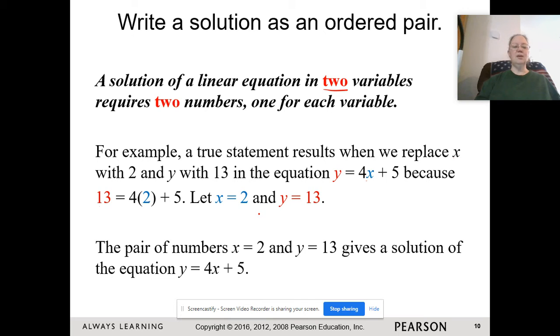So 13 equals 4 times 2 plus 5. 4 times 2 is 8 plus 5, which is 13. We get 13 equals 13. So this pair of numbers, 2 and 13, would give us a solution to this particular equation. However, there are actually infinitely many solutions to this equation. When you have two variables, we have a lot more solutions.